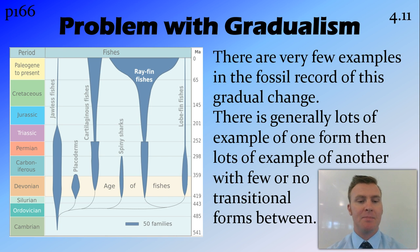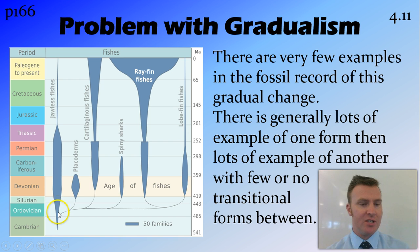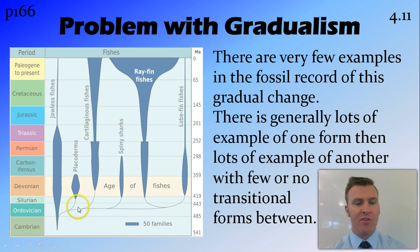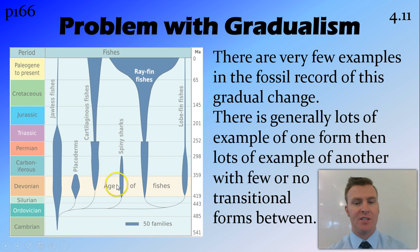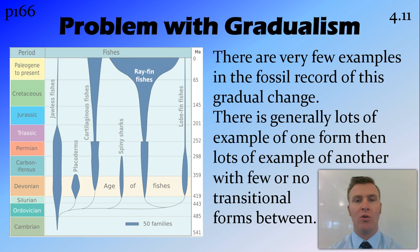Horses are actually a special case. Looking at different types of fishes, we have lots of one type of fish, then very few of these different branches of fishes, and then we get lots of those types of fishes again. So we don't have these transitional forms, or very many of these transitional forms.